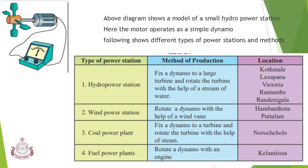The following shows different types of power stations and methods. For a hydropower station, the method of production is to fix a dynamo to a large turbine and rotate the turbine with the help of a stream of water. Locations include Kothmale, Laksapana, Victoria, Gantabe, and Kandanigala.